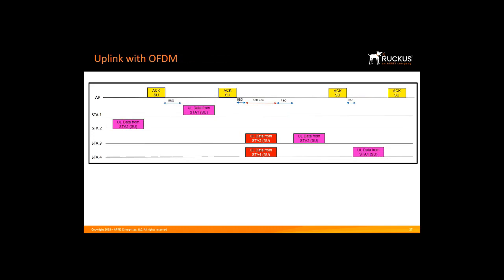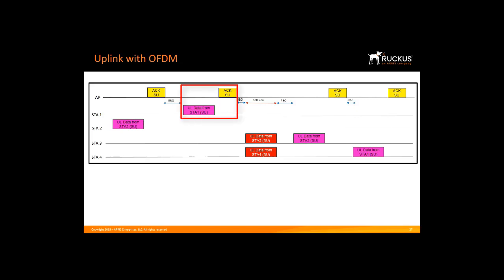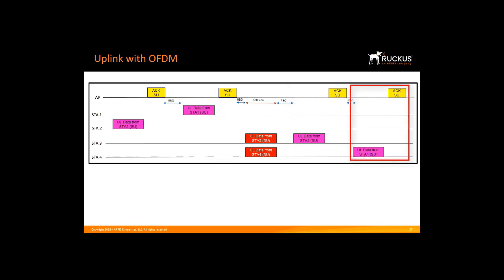From the OFDM uplink point of view, four devices are trying to transmit data to an AP on an 80 MHz channel. In the traditional 11ac world, all four clients compete for the medium. Station 2 wins, transmits its data, and the AP sends an acknowledgement back. Then all clients do a random backoff, and Station 1 wins the next exchange. In a third exchange, Stations 3 and 4 both pick the same random backoff parameter, causing a collision — that time period is wasted. Both stations wait for an acknowledgement that never comes, then do another random backoff before Stations 3 and 4 each eventually complete their transmissions.